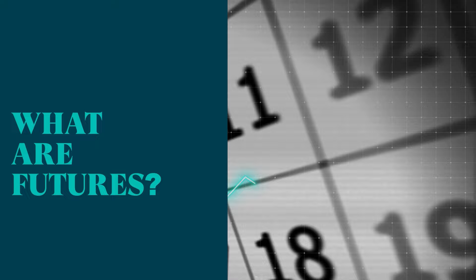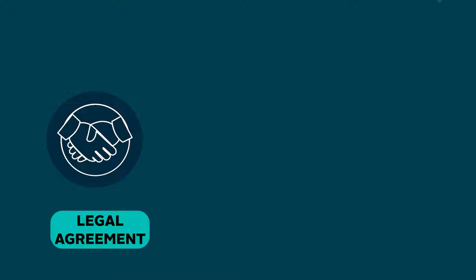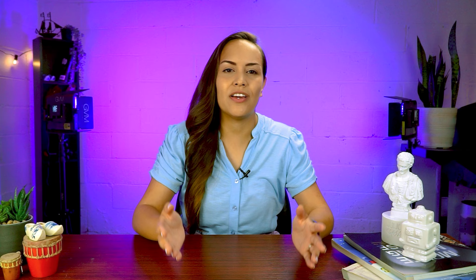Let's start with futures. As the name suggests, it is a legal agreement between two parties to buy or sell an asset at a set price in the future. Before the parties get into the contract, they generally agree on two things: one is the price at which they will exchange the asset in future, and two is the expiration date of the contract, which is simply the date the contract will be closed and settled.